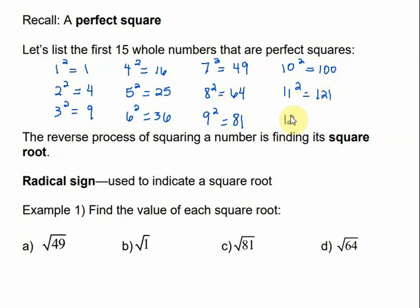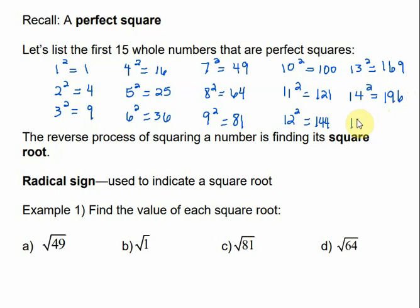100 is a perfect square. 121. 144. 13 squared would be 169. 14 squared is 196. And 15 squared is 225. We could keep going, but those are the first 15 perfect squares. These numbers are the perfect squares because we got them by multiplying another number times itself.